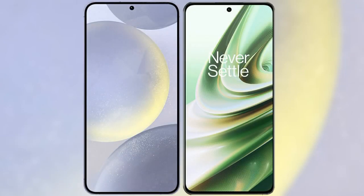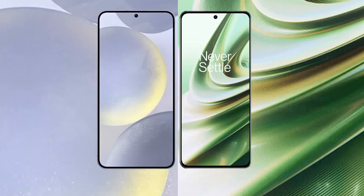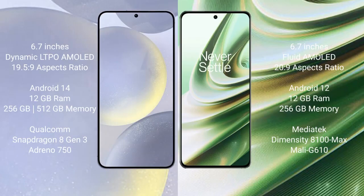I will compare the new Samsung Galaxy S24 Plus with the OnePlus 10R. The Samsung Galaxy S24 Plus comes with a 6.7-inch Dynamic LTPO AMOLED display and an aspect ratio of 19.5:9. The OnePlus 10R comes with a 6.7-inch flat AMOLED display and an aspect ratio of 20:9.